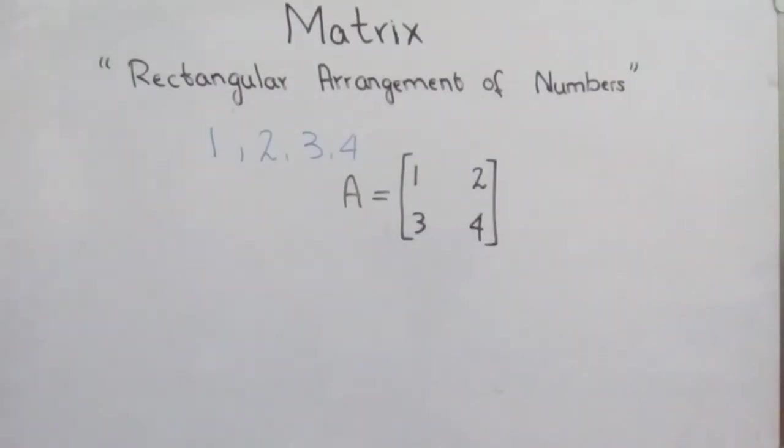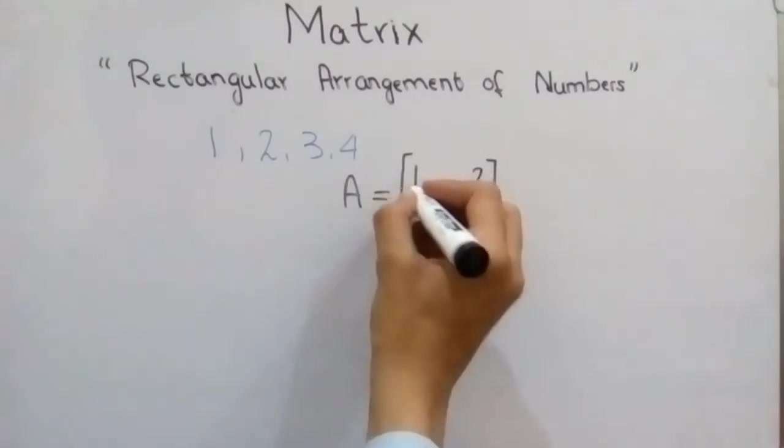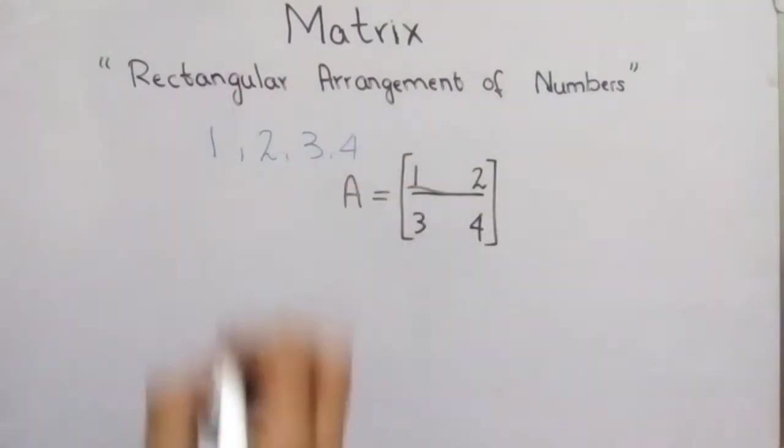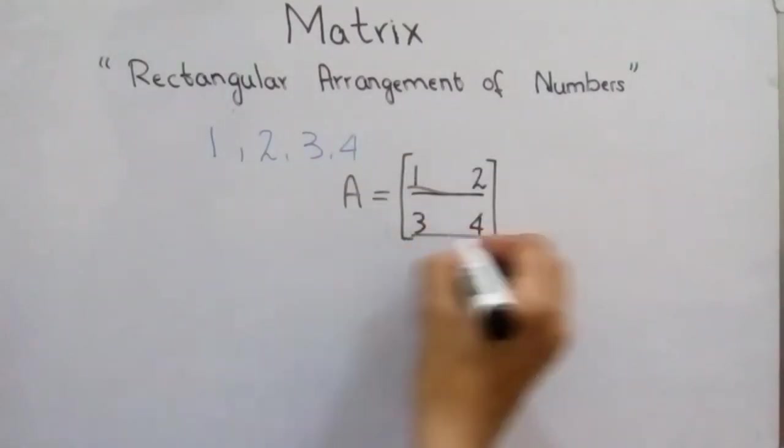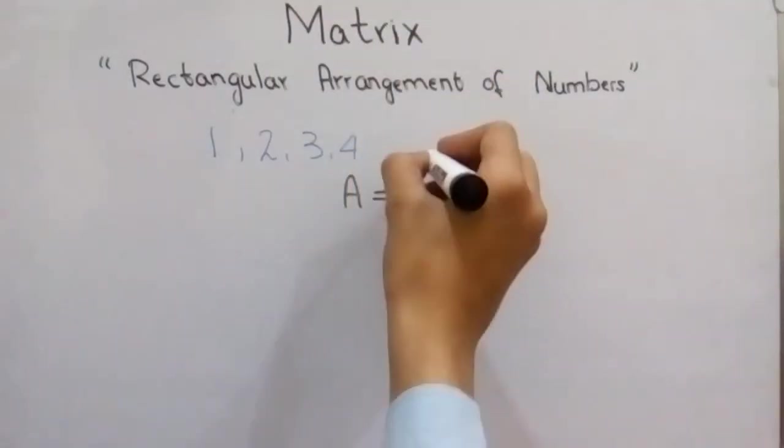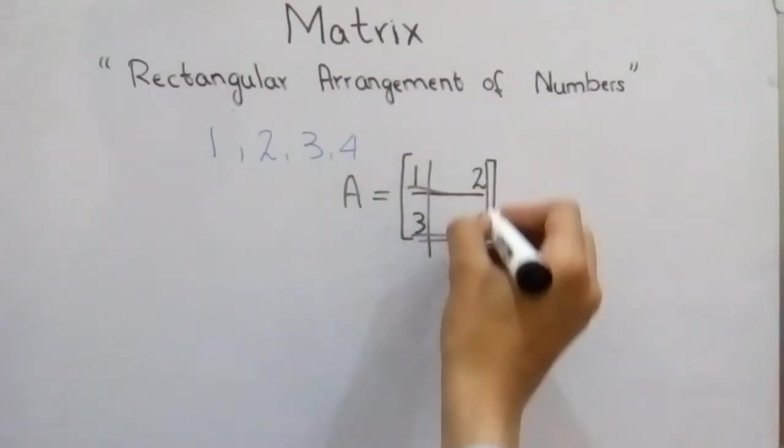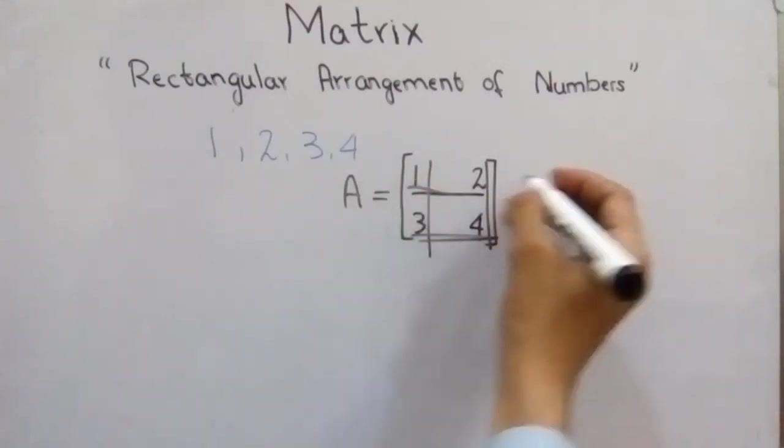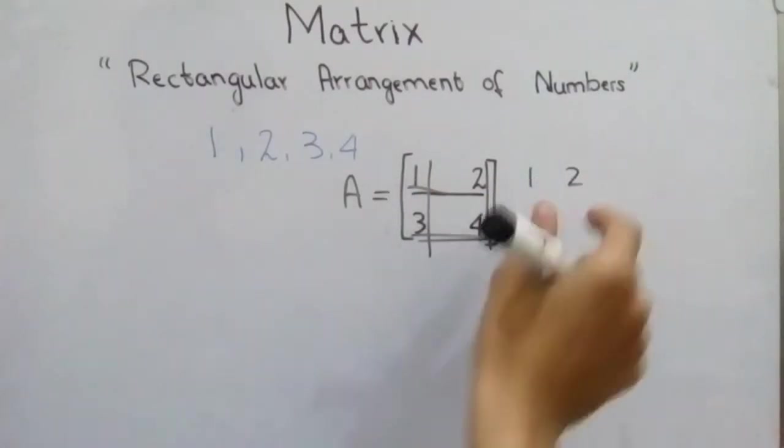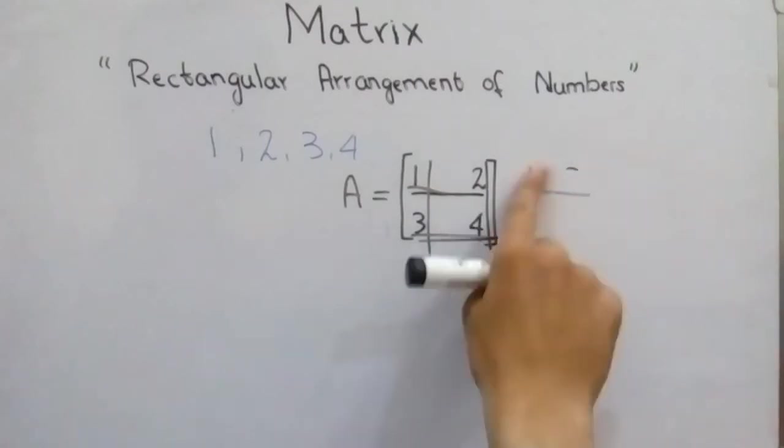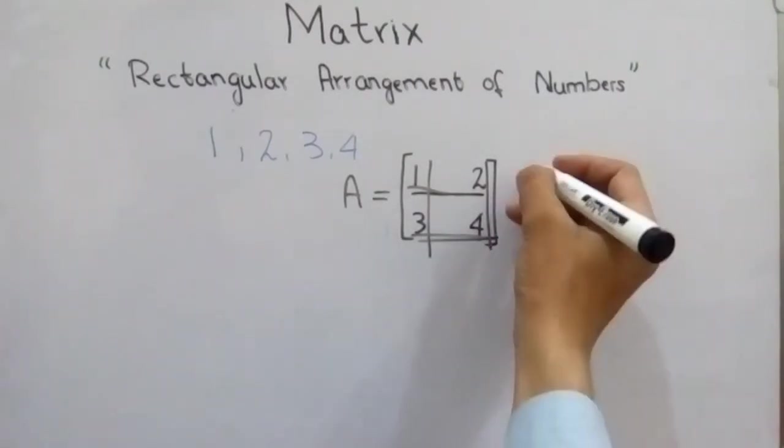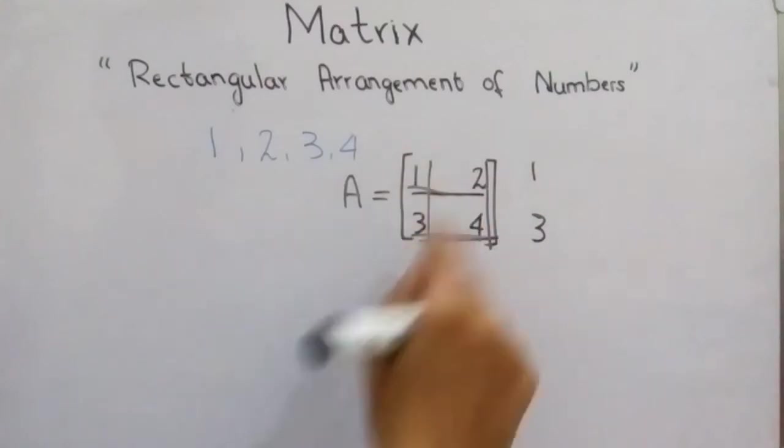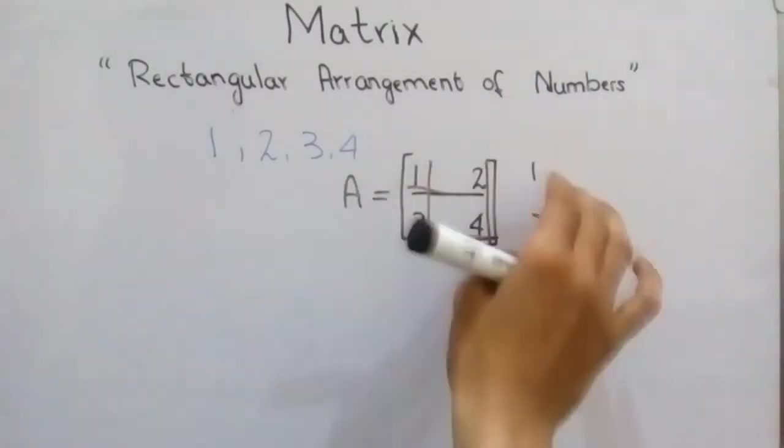Now these numbers are arranged in rows and columns. So what do we call rows? Rows is the arrangement of numbers in horizontal form, horizontally. And vertical arrangement of numbers is columns. 1, 2 is a row, and 1, 3 is a column. 2, 4 is a column, and 3, 4 is a row.